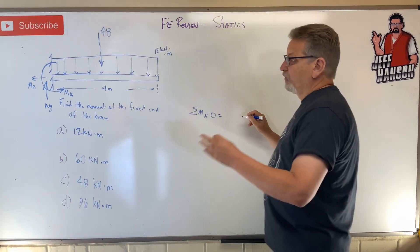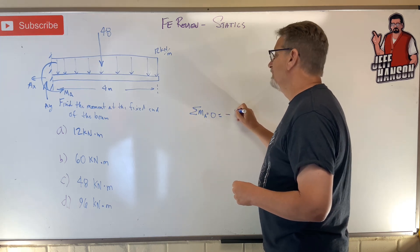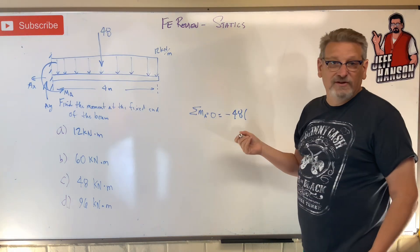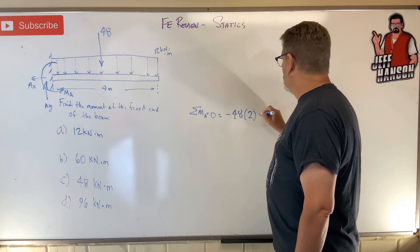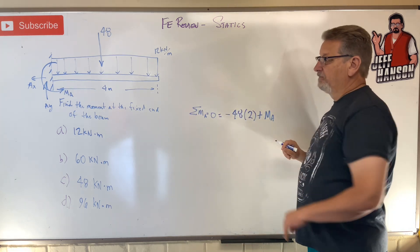And so the moment is 48 going negative, right? So minus 48 times how far away? Well it's in the middle of the rectangle which is at 2. And then don't forget about ma over there. You can't knock out moment that goes in there like that.